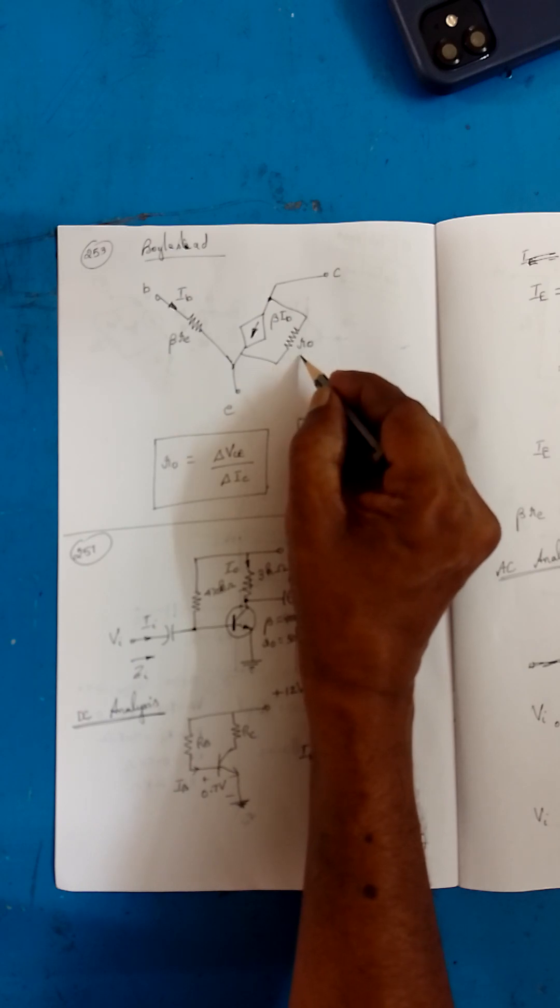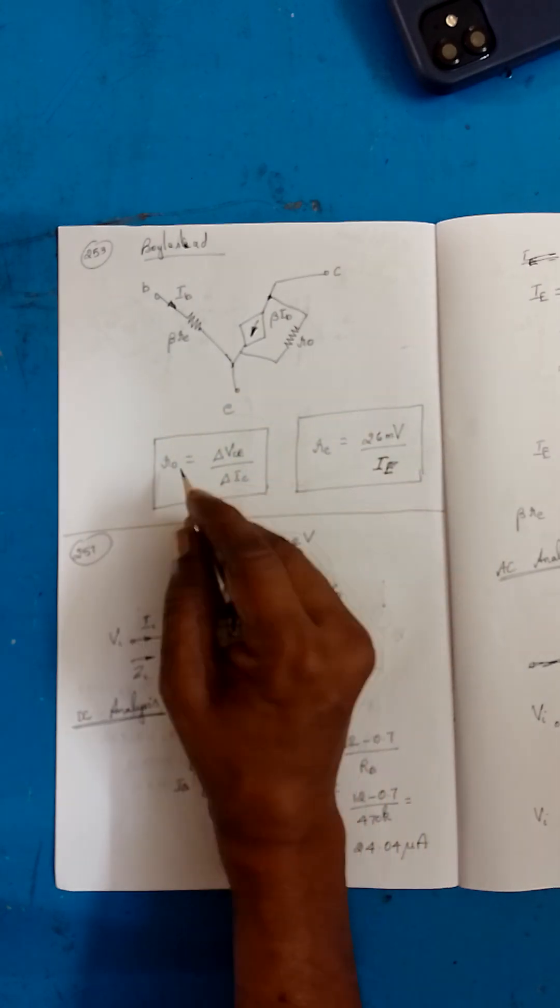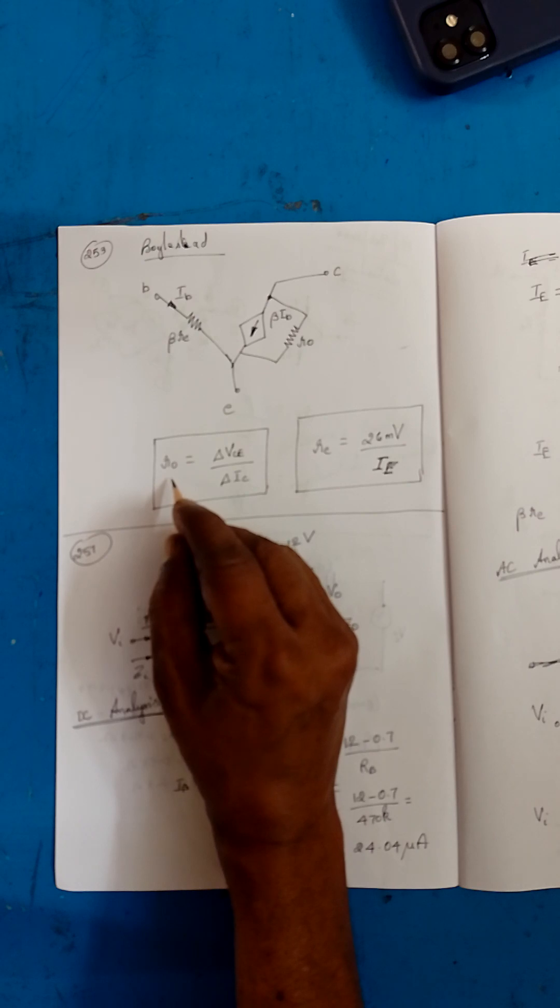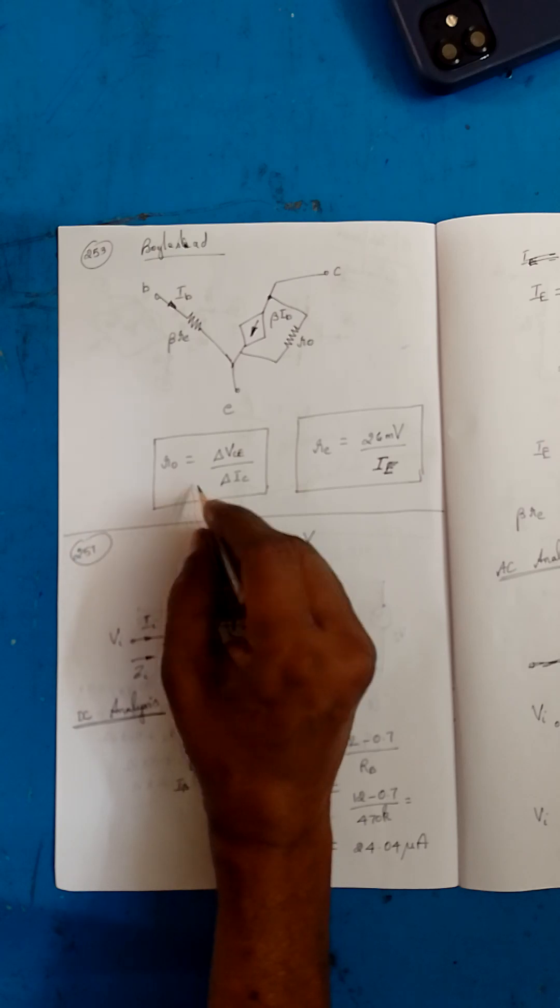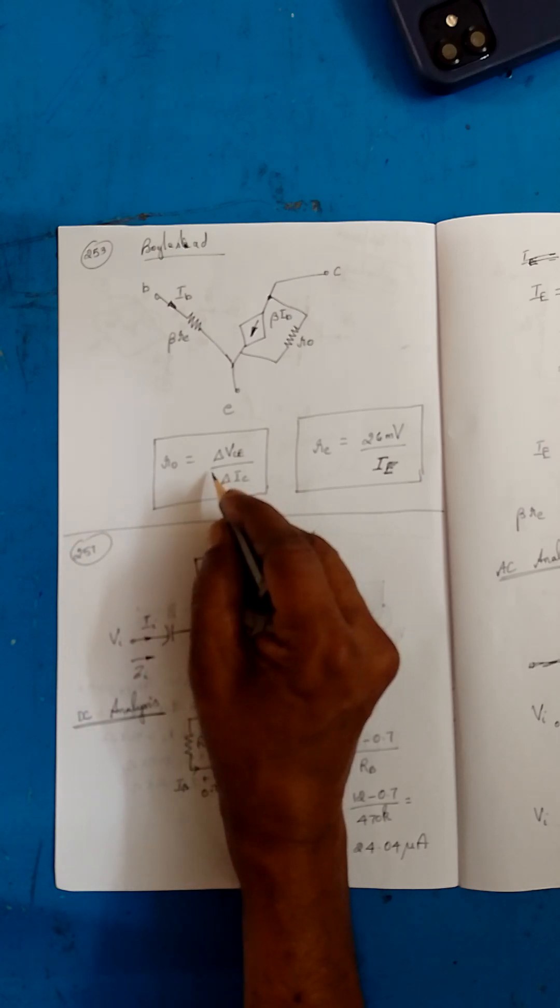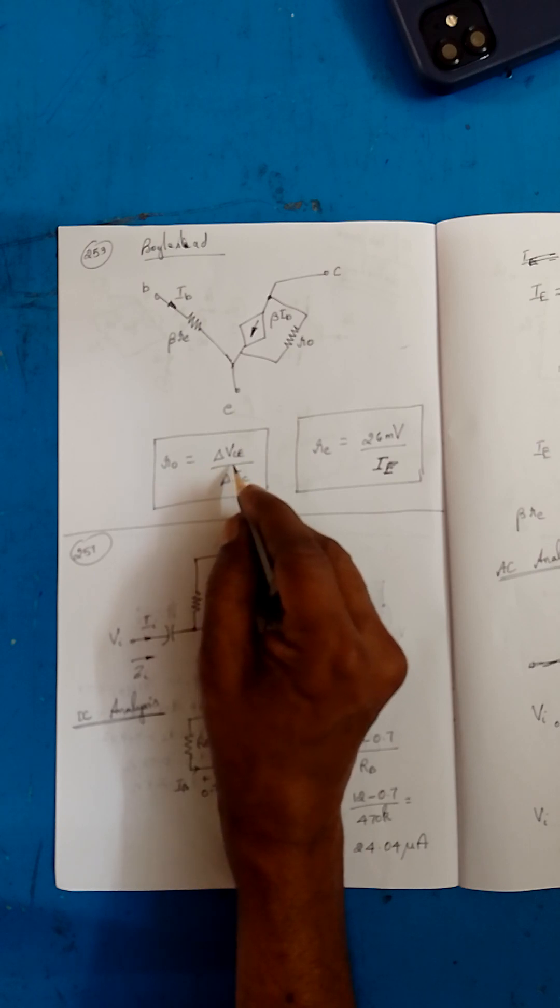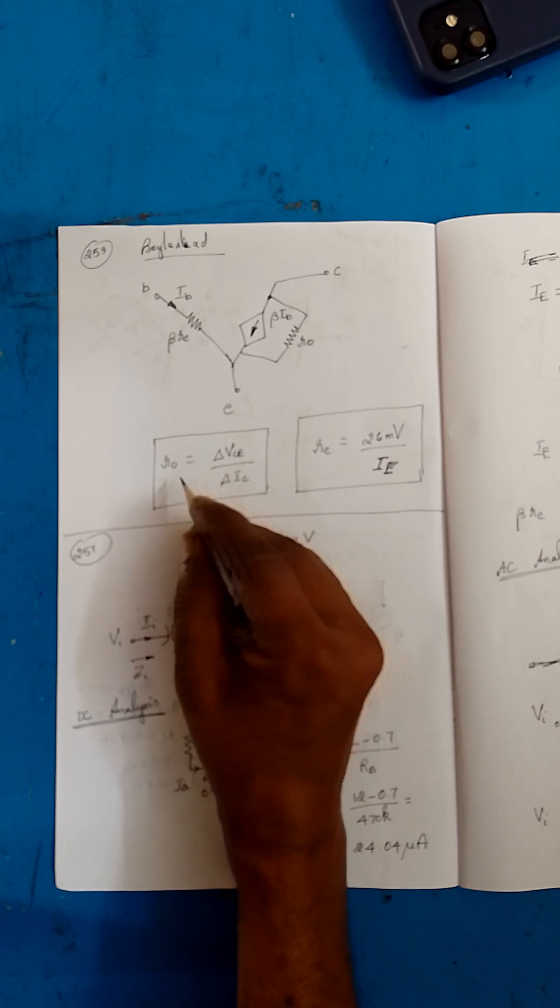r naught is the output resistance. This is the emitter. r naught usually will be given in the question itself, but if you want to find out r naught, you have to do contact in the lab and find out change in VCE to change in IC. That will give you r naught.